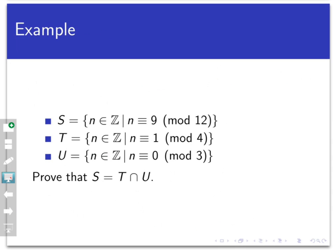Let's set up an example. This is a slight expansion on the example from the last video. We're going to let S be the set of all integers congruent to 9 mod 12, T be the set of all integers congruent to 1 mod 4 — that was from last time — and now we throw in a new set U, the set of all integers congruent to 0 mod 3.